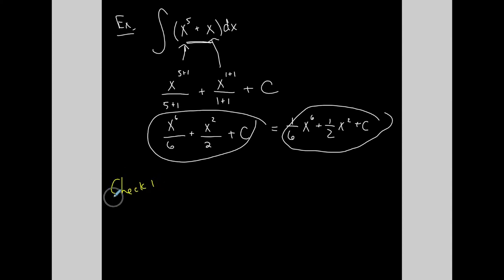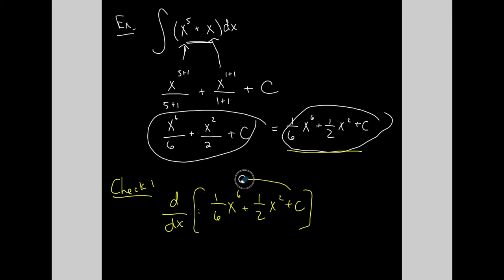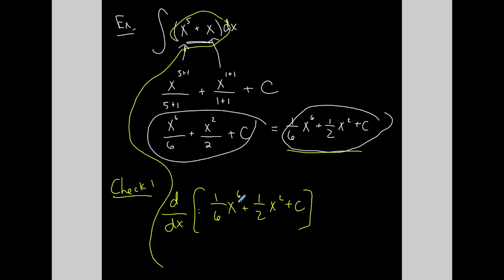Here's my check: to verify I integrated properly, I'll find the derivative of my anti-derivative — 1/6 x to the sixth plus 1/2 x squared plus c. Bring the 6 to the front: 6 times 1/6 is 1, giving x to the fifth. Then 2 times 1/2 is 1, giving x. The derivative of the constant is 0. Whatever comes from the derivative of the anti-derivative should match what was in the original problem.